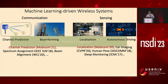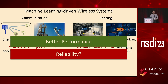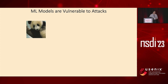All of these machine learning-driven applications are telling us that leveraging machine learning can deliver better performance. However, its reliability is still an unsolved problem. In fact, past works have already shown that machine learning models are vulnerable to attacks. Let me give you a simple example. This is an image of a panda, and if you feed this panda image into a neural network, it will correctly classify it as a panda easily.